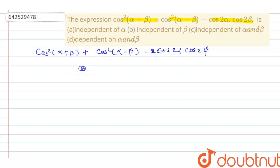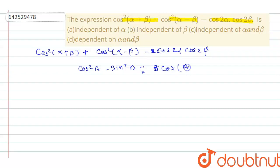I will use the formula cos²a - sin²b = cos(a+b)·cos(a-b). I will use this formula here.